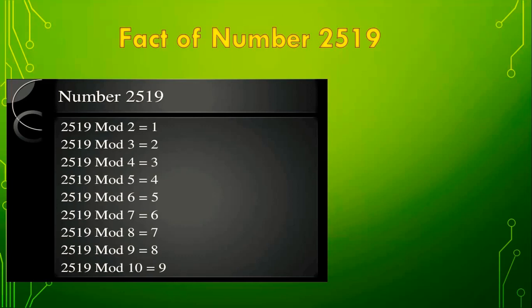Similarly, 2519 divided by 3 gives remainder 2. When you divide 2519 by 4, the remainder is 3. Like that, when you divide 2519 by 7, the remainder is 6. When you divide 2519 by 8, the remainder is 7. When you divide 2519 by 10, the remainder is 9. So, this is a beautiful number — when you divide 2519 by 2, 3, 4, 5, 6, 7, 8, 9, or 10, you always get a remainder that is 1 less than the divisor.